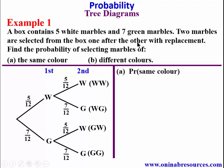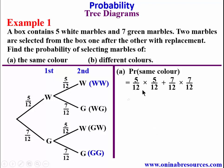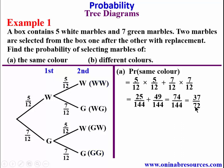Going to Part A of the problem: the probability of selecting marbles of the same color will be white-white or green-green. The probability of white-white is 5/12 times 5/12. Since it is 'or', we apply the addition law, and for green-green we have 7/12 times 7/12. So: 5/12 × 5/12 = 25/144, plus 49/144. Since we have the same denominators, we add the numerators to get 74/144, which simplifies to 37/72.